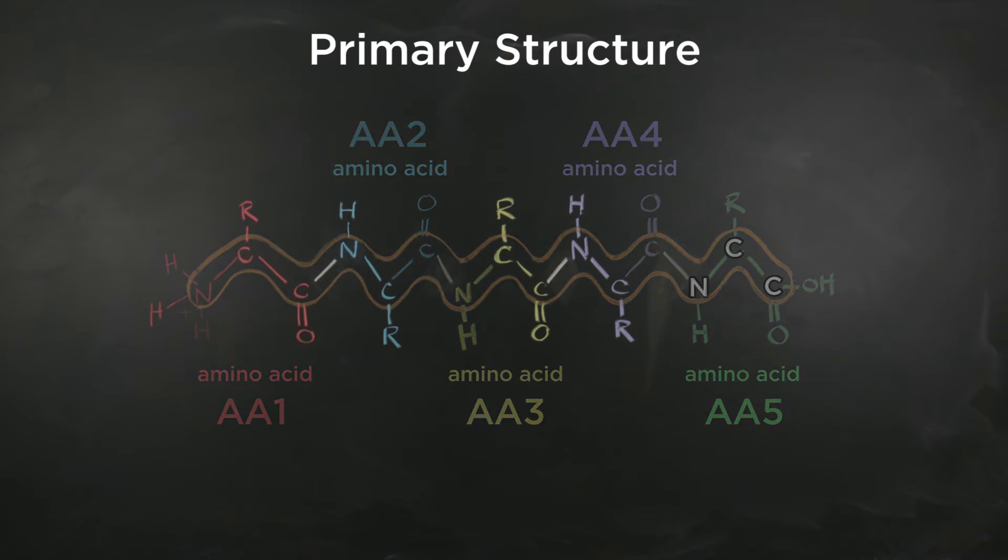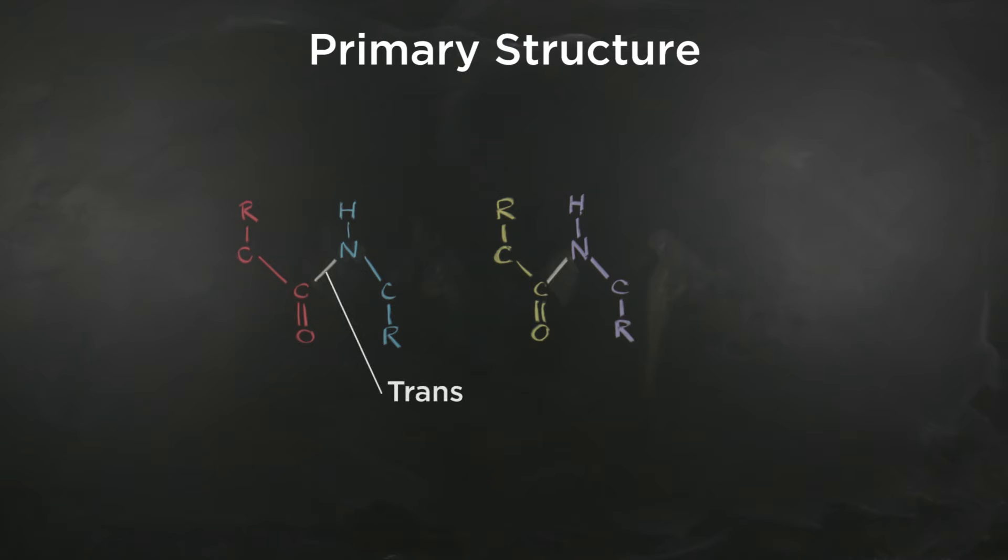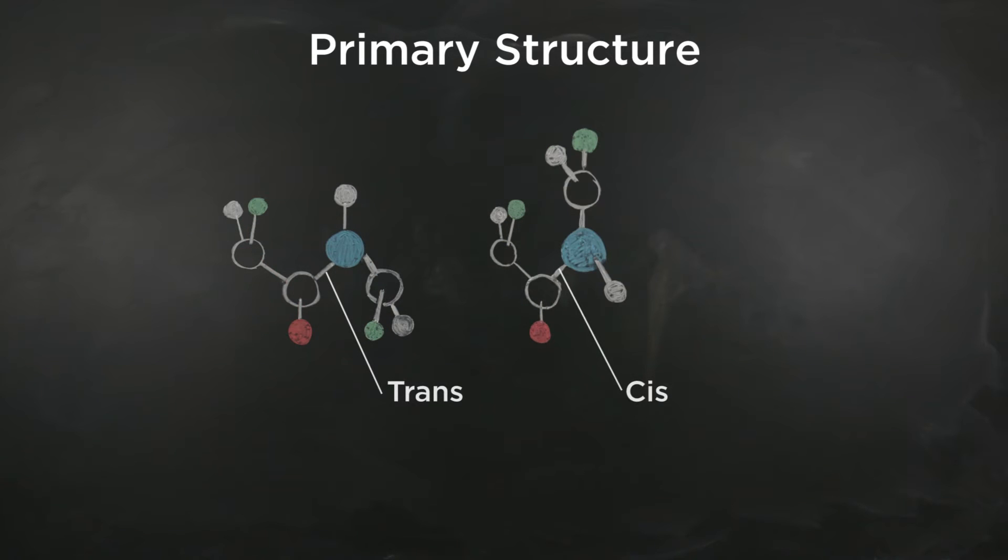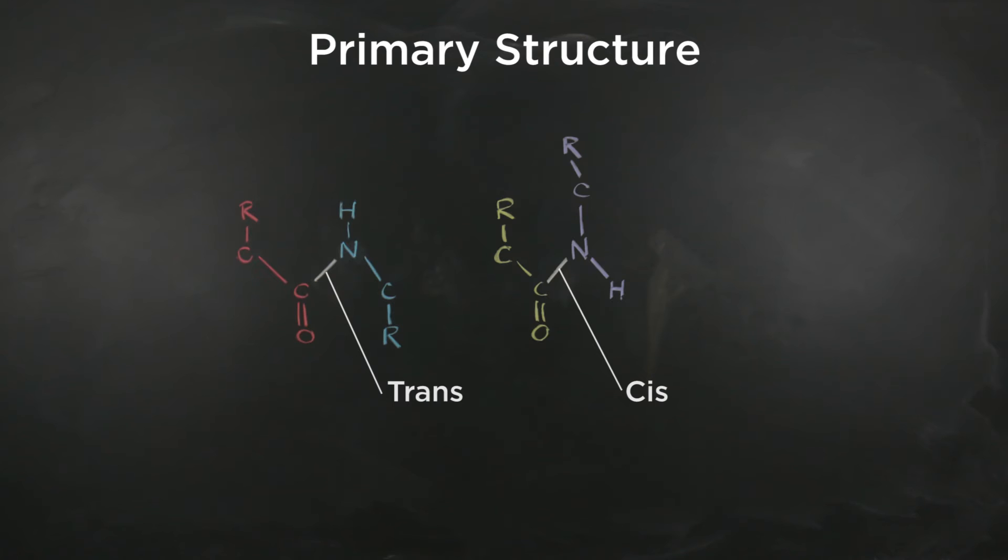Most peptide bonds are in the trans configuration rather than in the cis configuration. The trans configuration is more favorable since it reduces the steric hindrance that occurs between the functional groups of adjacent amino acyl residues.